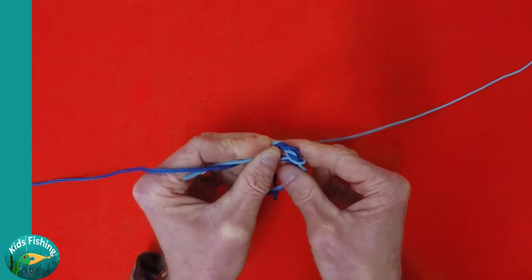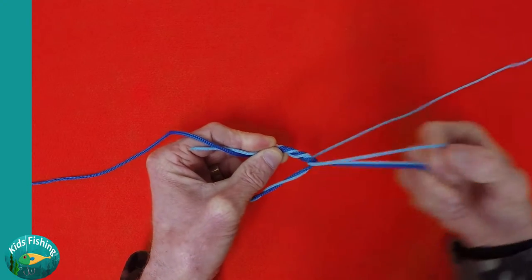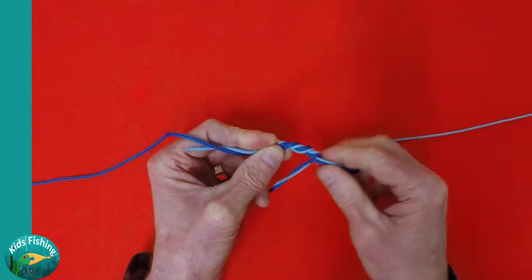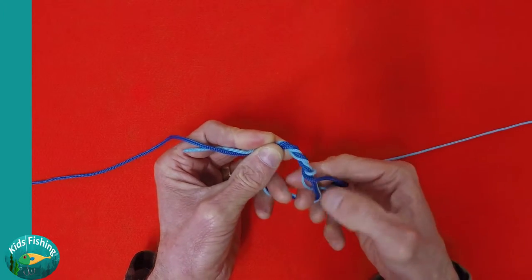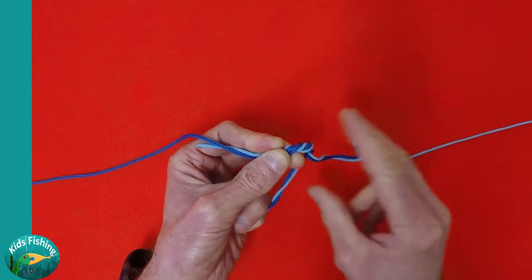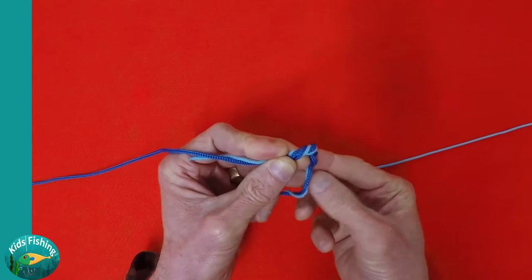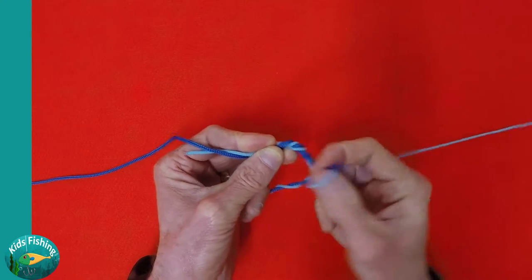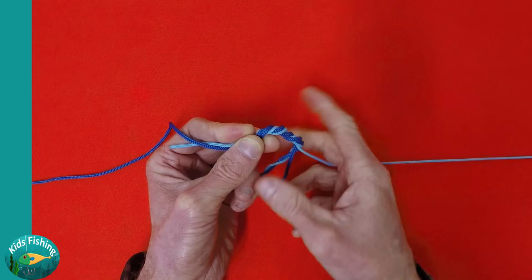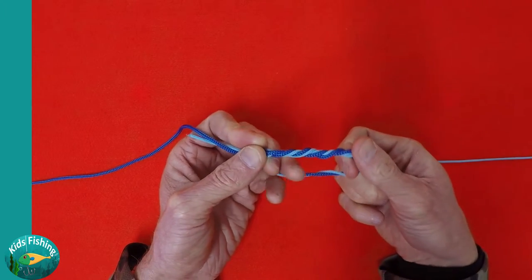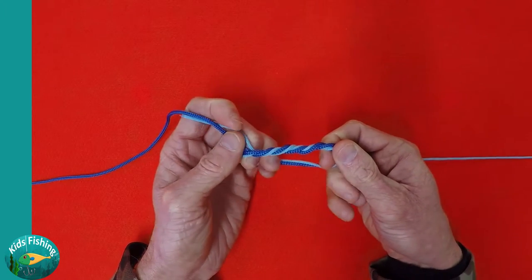We're going to do three wraps. Now depending on the thickness of the line will determine how many times you need to wrap it through. So the thicker the line, the less wraps. The thinner the line, the more. So it could be somewhere between three and seven wraps. We've done our three there.